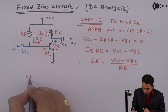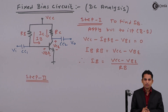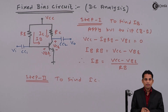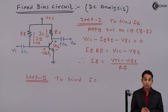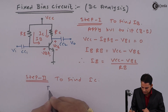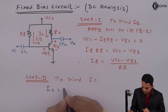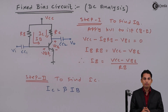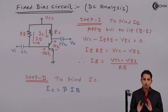In step two, we are supposed to find out collector current IC. We know the relationship between collector current IC and base current IB in terms of beta. IC, that is collector current, is equal to beta times base current IB. From this equation we get collector current IC. So from step one and step two, we have got input current IB and output current IC respectively.